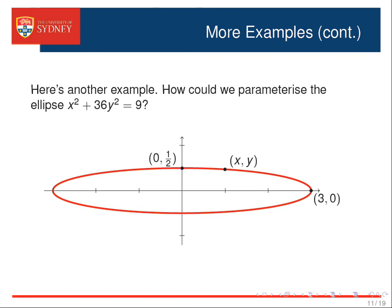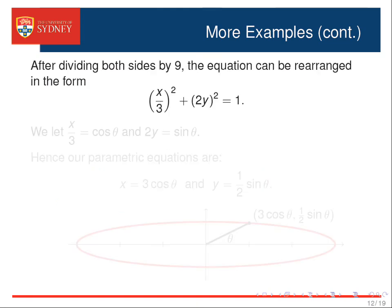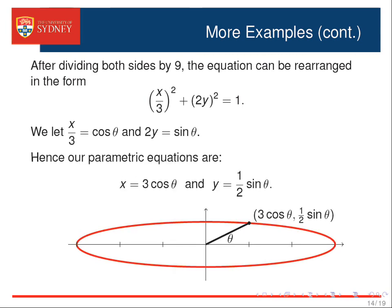Let's consider another example. How could we parameterize the ellipse x squared plus 36y squared equals 9? After dividing both sides by 9, we can rearrange the left-hand side using the index laws into the following form. We then parameterize the ellipse by setting x on 3 to be cosine theta and 2y to be sine theta. Hence, our pair of parametric equations are x equals 3 cosine theta and y equals a half sine theta.